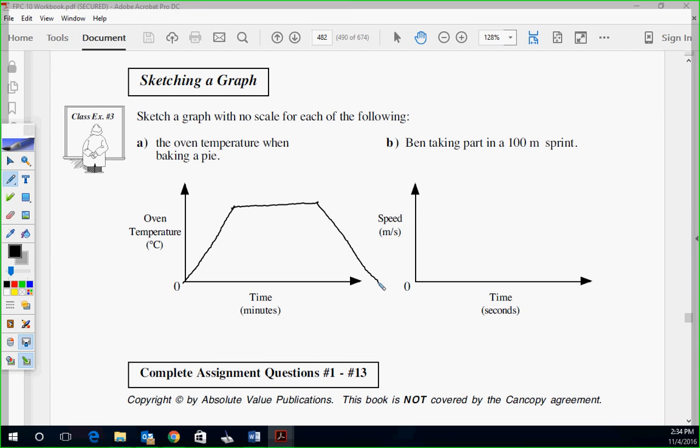Ben taking part in the 100-meter sprint. He's going to speed up, and then he's going to top out a little bit, and then he's going to get tired, and then he's going to coast to the finish. Maybe this is the finish line, then he slows down to where he stops, like he's done with the race. So that could be an example of a sprint.